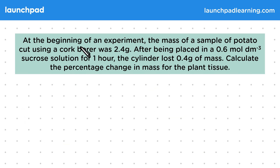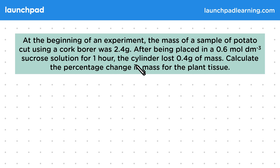At the beginning of an experiment, the mass of a sample of potato cut using a cork borer was 2.4 grams. After being placed in a 0.6 moles per decimetre cubed sucrose solution for one hour, the cylinder lost 0.4 grams of mass. Calculate the percentage change in mass for the plant tissue.